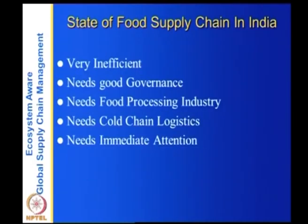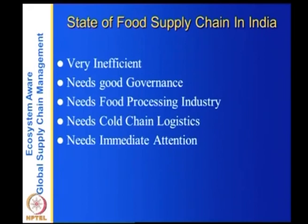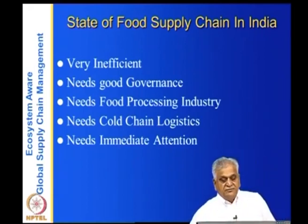In summary, the food supply chain in India is highly inefficient. We have gone through the ecosystem, supply chain, resources, institutions, delivery mechanisms, and the conclusion is: it needs good governance, a food processing industry, cold chain logistics, and immediate attention because it affects the entire country. We will stop here and continue in the next lecture.